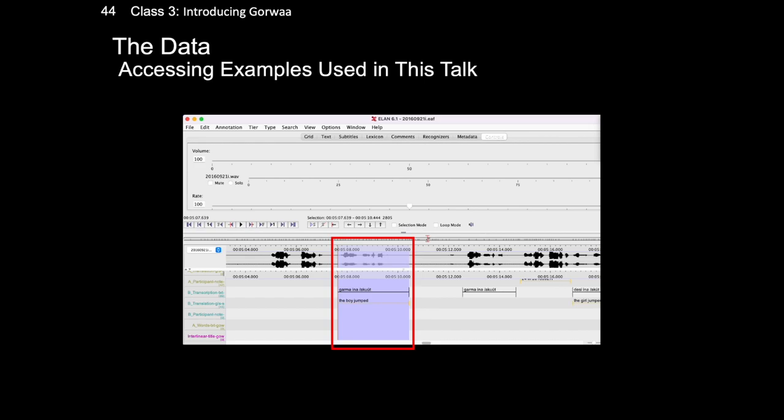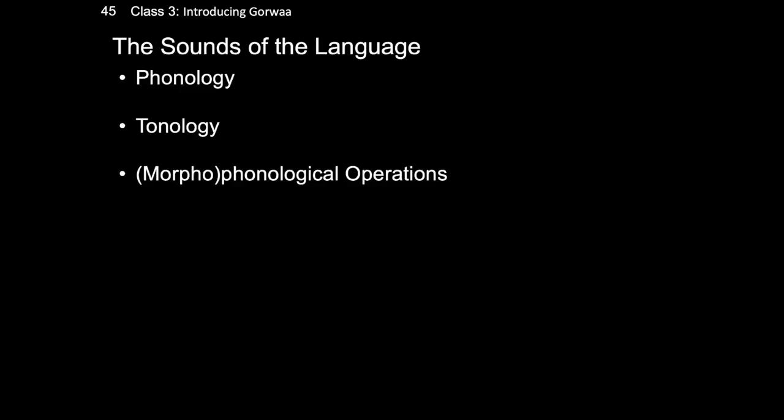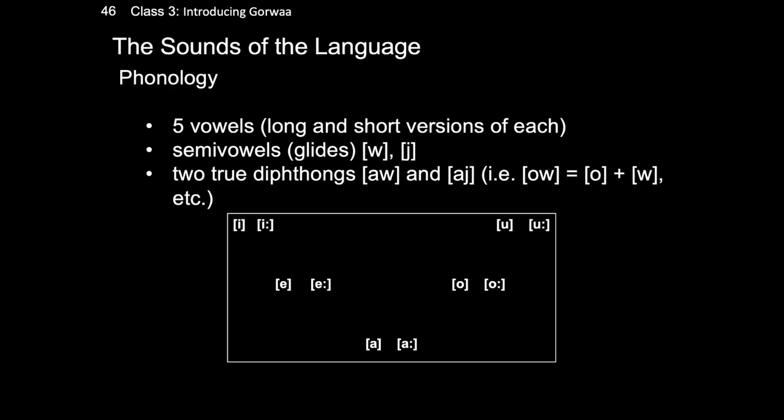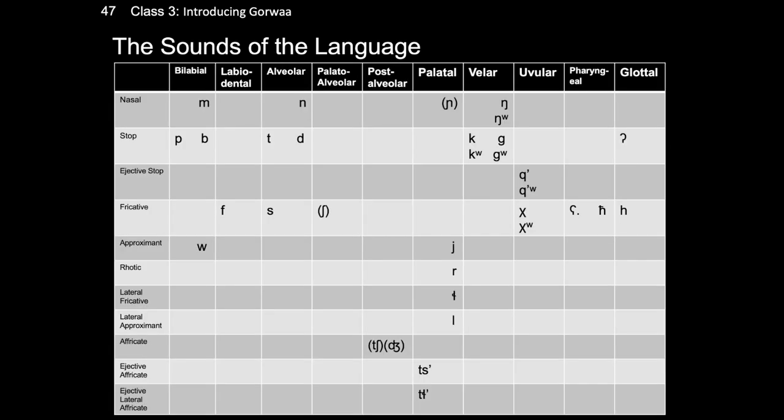The specific example is highlighted on screen. To start looking at Gorwa from a formal perspective, we'll start with the sounds of the language. We'll begin with the phonology and then examine tone, followed by some examples of how these two elements interact with the language's morphology. First, Gorwa is a five-vowel system with long and short versions of each, for a total of ten vowels, along with semi-vowels w and y, along with two true diphthongs ao and ai.